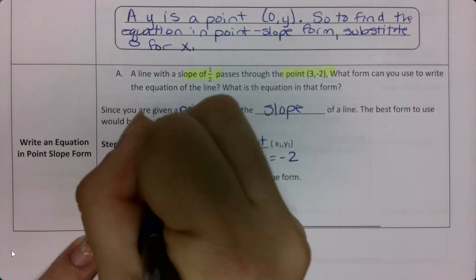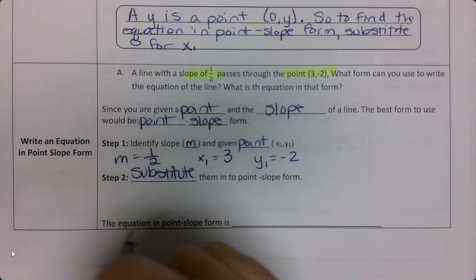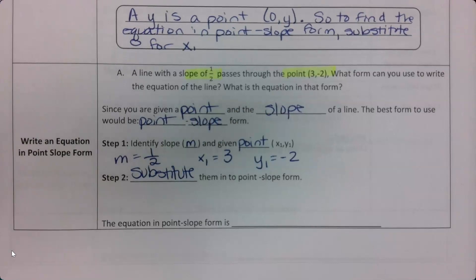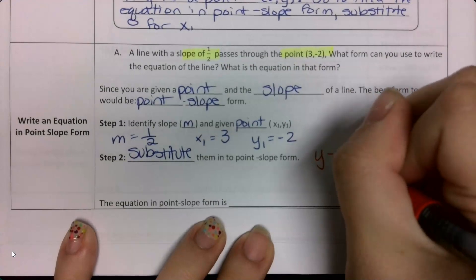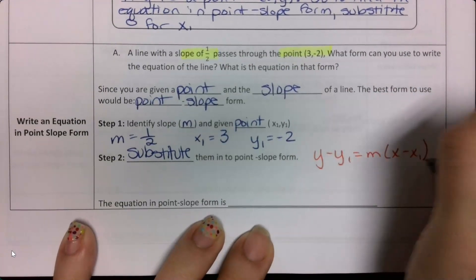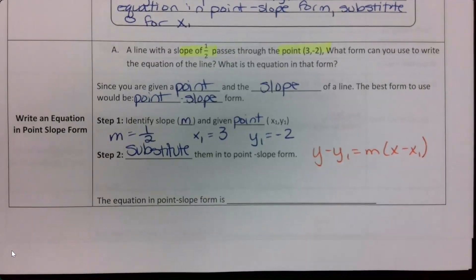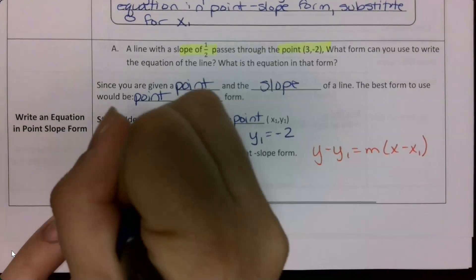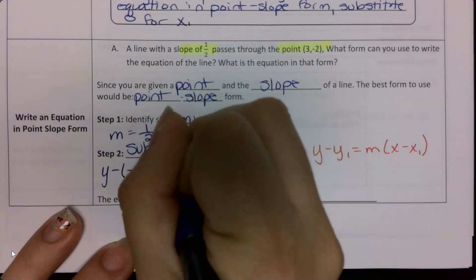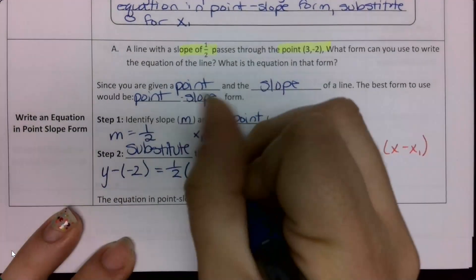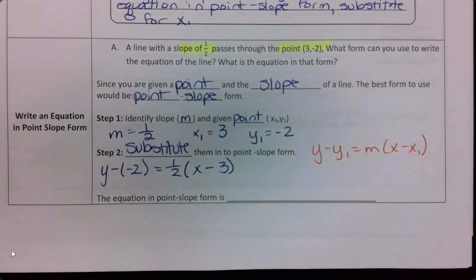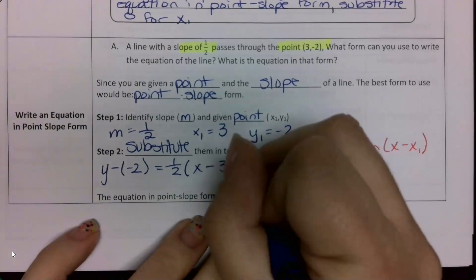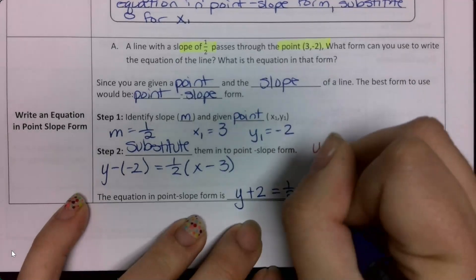Now I want to substitute them into point-slope form. Writing point-slope form again: y minus y sub 1 equals m times x minus x sub 1. Plugging in: y minus negative 2 equals 1/2 times x minus 3. Fixing that double negative, it becomes y plus 2 equals 1/2 times x minus 3.